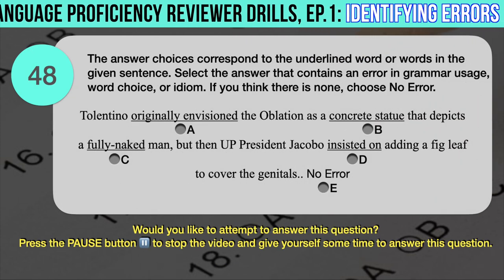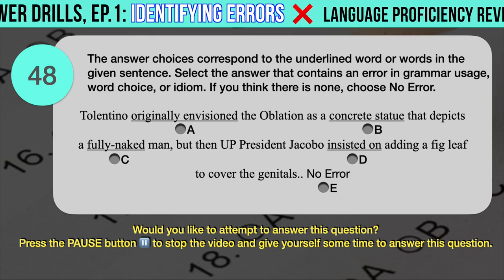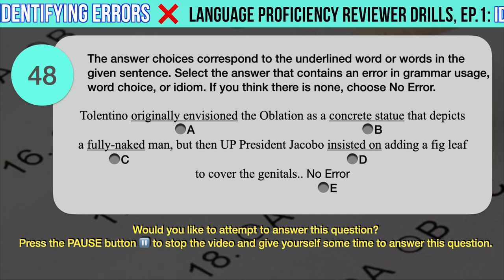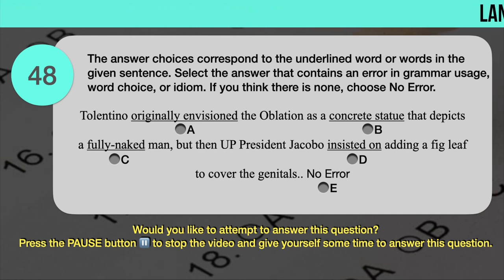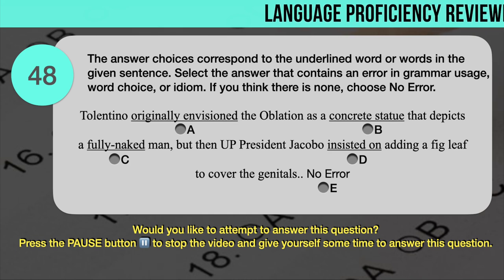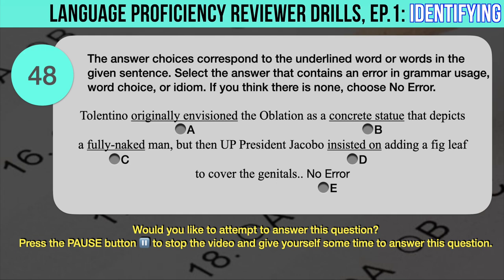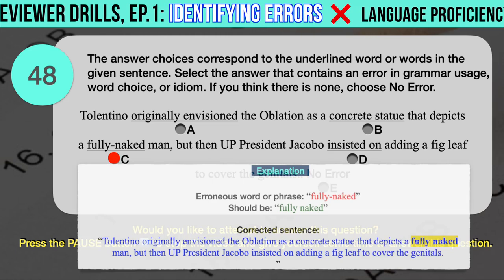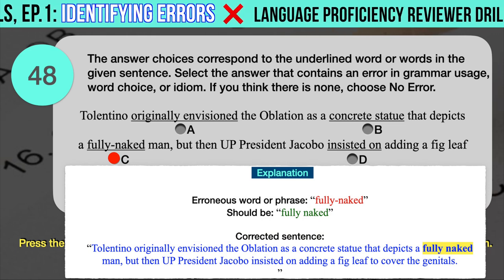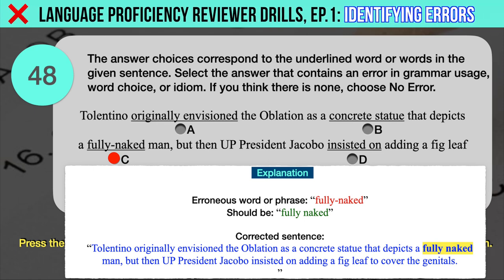Drill question number 48. 'Tolentino originally envisioned the ablation as a concrete statue that depicts a fully naked man, but then UP President Jacobo insisted on adding a fig leaf to cover the genitals.' The underlined words are: A. Originally envisioned, B. Concrete statue, C. Fully naked, D. Insisted on. The correct answer is C. 'Fully naked' with a hyphen should have been 'fully naked' without a hyphen. Since the adverb 'fully' modifies the adjective 'naked,' no hyphen is needed between them.